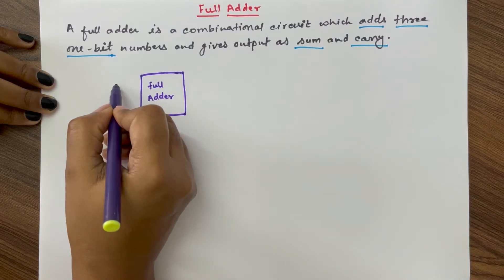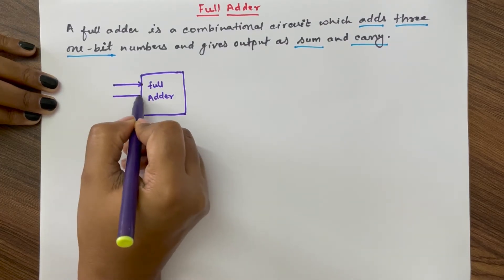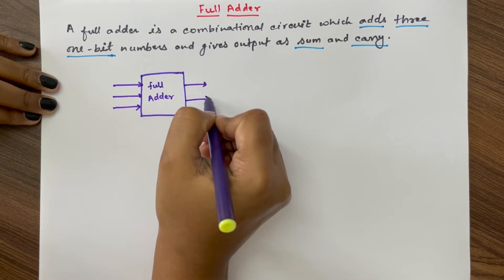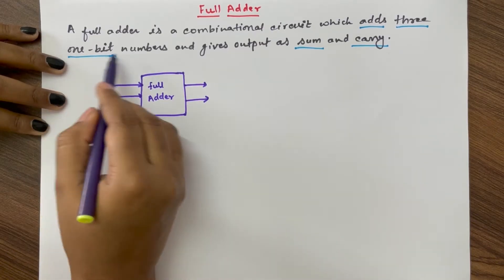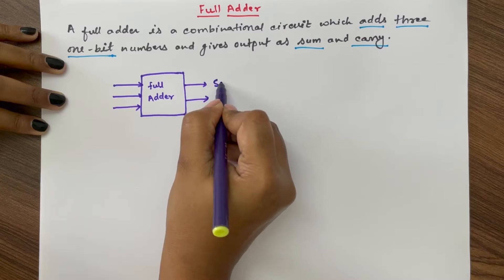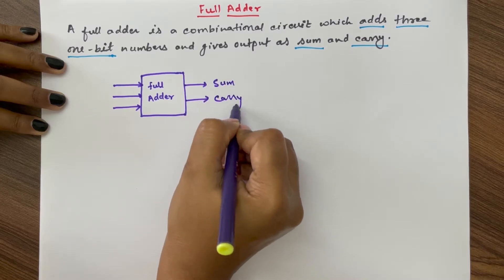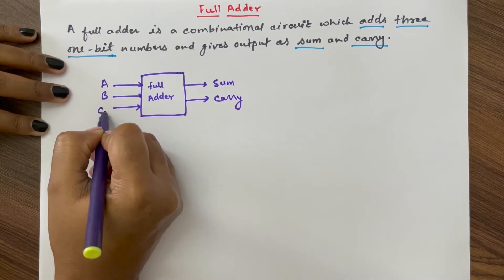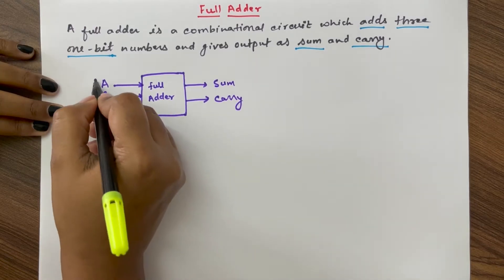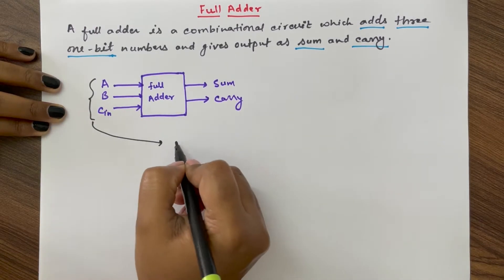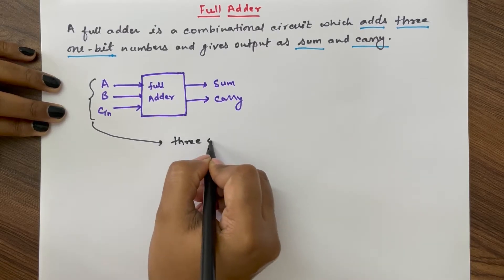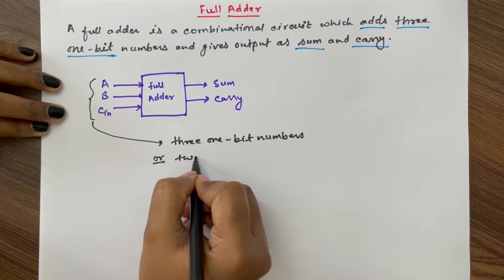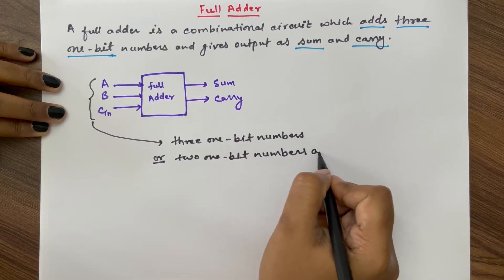A full adder will have three inputs and two outputs. These three inputs will be one-bit numbers and the output will be sum and carry. Let's say these inputs are A, B, and C. These three inputs can be either three one-bit numbers, or two one-bit numbers and an input carry.